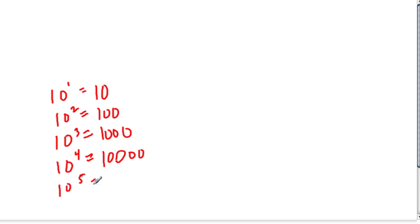We have to first of all realize a couple of really important things. 10 to the 1st is just 10. 10 to the 2nd is 100. 10 to the 3rd is 1,000. 10 to the 4th is 10,000. 10 to the 5th is 100,000.